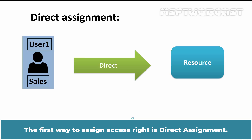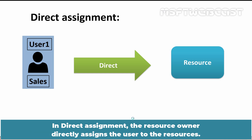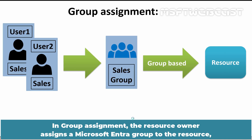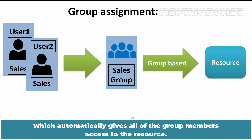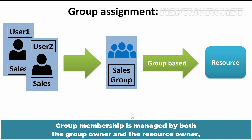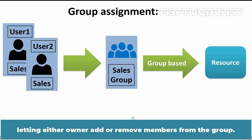The first way to assign access rights is Direct Assignment, where the resource owner directly assigns the user to the resource. The second is Group Assignment, where the resource owner assigns a Microsoft Entra group to the resource, which automatically gives all group members access to the resource. Group membership is managed by both the group owner and the resource owner, letting either owner add or remove members from the group.